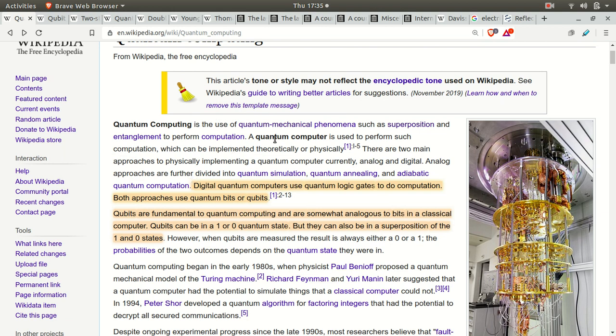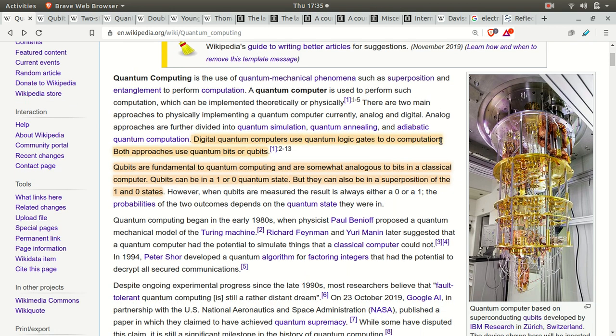So quantum computing is the use of quantum mechanical phenomena such as superposition and entanglement to perform a computation. A quantum computer is used to perform such computation which can be implemented theoretically or physically. We're going to concern ourselves with the physical implementation. We want an actual computer, not just theoretical papers that tell us we can have one.